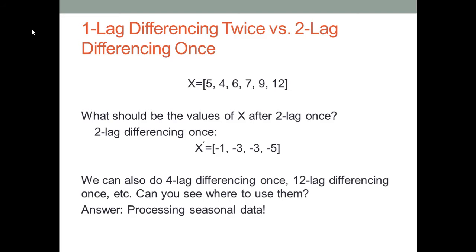If we can do 2-lag differencing, we can also do 4-lag differencing or 12-lag differencing. Can you see where we would use those? Yes — we can use them to process seasonal data, since we need to transform seasonality into a stationary dataset as well. In the next few lectures, I will talk about all of these techniques in more detail. Fortunately, we don't have to do differencing by hand. As long as you figure out what type of differencing you want to do and how many times, you can instruct the software and let it do all the labor work.